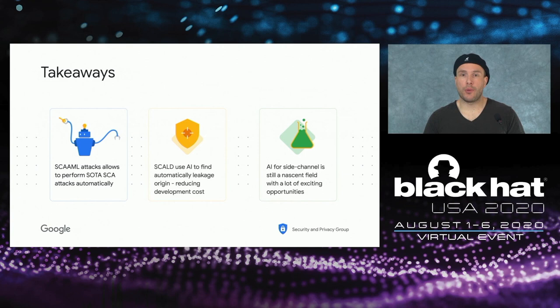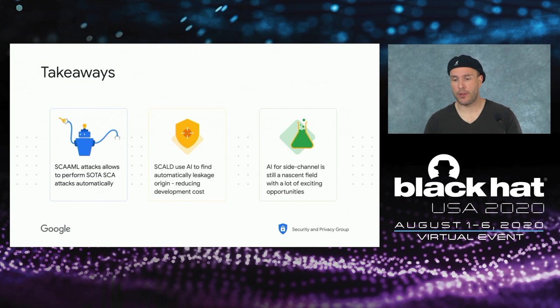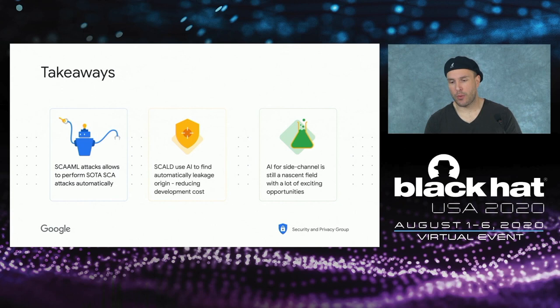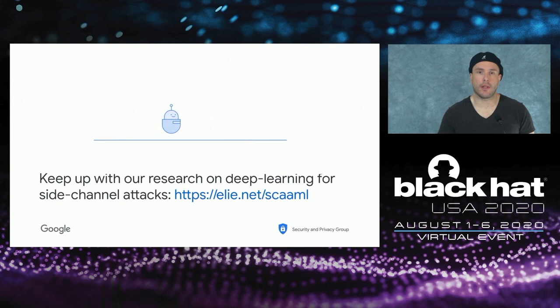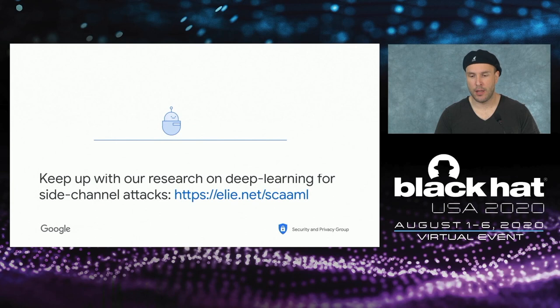The second main takeaway is that we showed how to combine AI capability with dynamic execution to find leakage almost automatically, helping reduce the development cost of secure hardware. There is a lot to be done — this talk shows one first step, not the best way. Other researchers, including from ANSSI, are exploring the same idea. There is a lot of work to be done applying AI for side-channel attacks and defenses. Thank you for attending. You can follow our research on our website and Twitter.